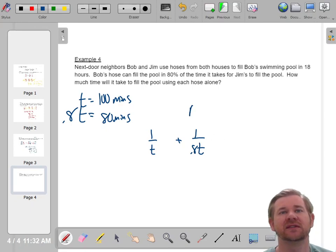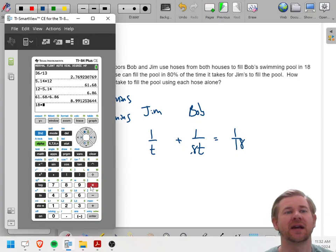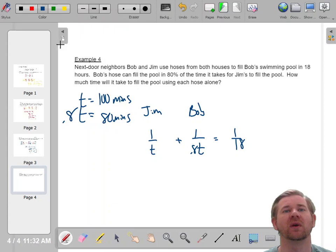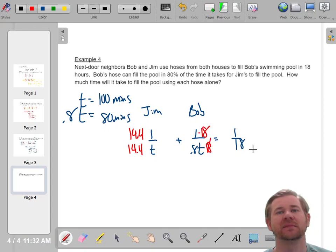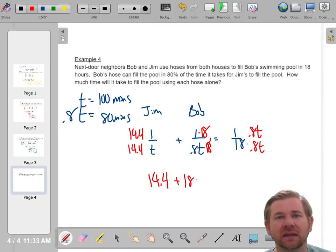So in this problem, it says we got Bob's hose and we got Jim's hose. Bob's hose can do it in 80% of the time. So we'll say 1 over T and 1 over 0.8 T. So this is the faster one. This is Bob and this is Jim. So however long it takes Jim, I don't know, but it takes Bob's 80% of that. And it says it takes them 18 hours together. If they work together, it's 18 hours. So we're going to multiply 18 times 0.8 to get a common denominator of 14.4. This needs a 14.4 in the top and the bottom. This needs an 18 in the top and the bottom. And this guy needs a 0.8 T in the top and the bottom.